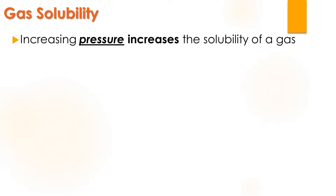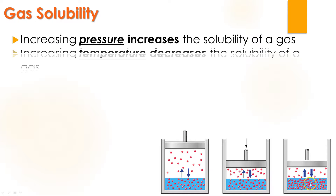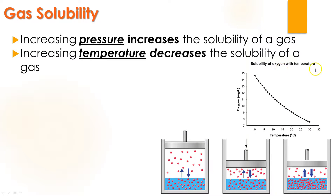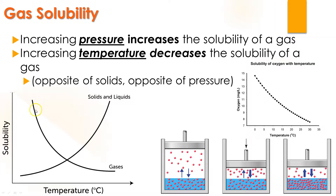Gas solubility: when you increase the pressure, you increase the solubility of a gas. With a piston over a liquid, pushing down increases pressure and pushes more of that gas into the liquid. This is how they make carbonated sodas — CO2 is put under pressure and that gets more carbon dioxide to dissolve in the water. However, if you increase the temperature, that actually decreases the solubility of a gas — this is counterintuitive. Increasing temperature means less oxygen can dissolve in it, which is the opposite of what we see with solids. So when pressure goes up, gas solubility goes up, but when temperature goes up, gas solubility goes down. At colder temperatures, more gas can be held in solution.